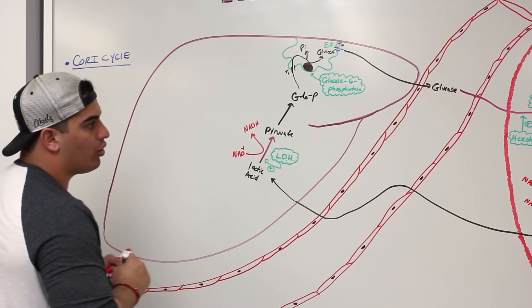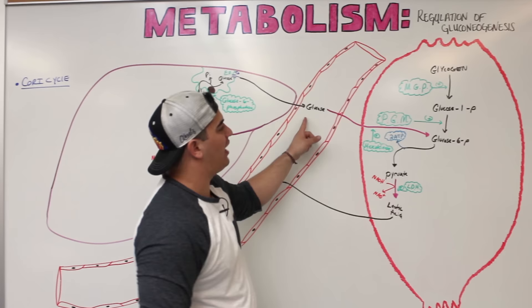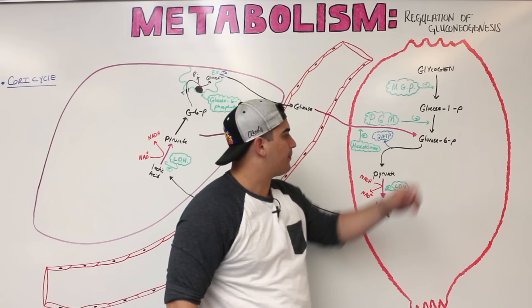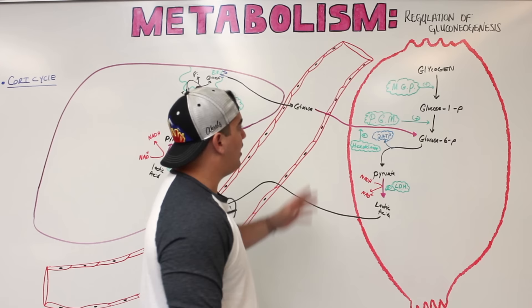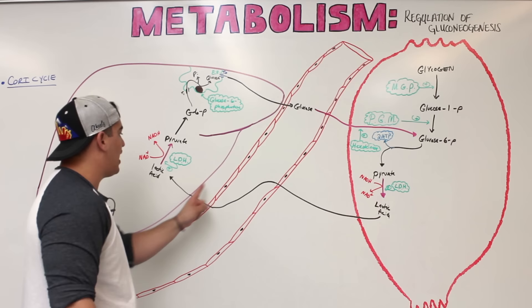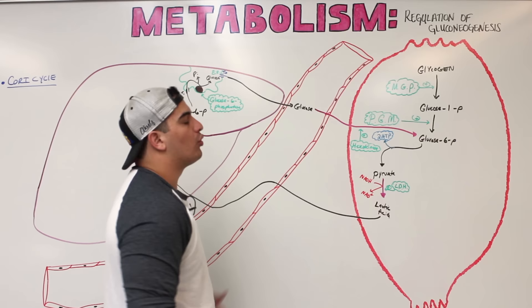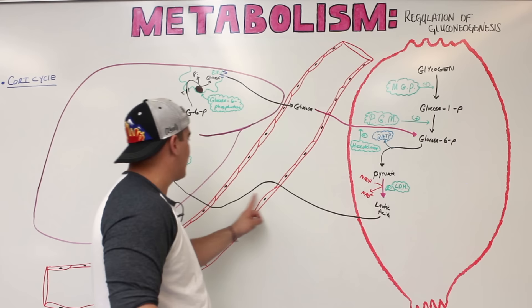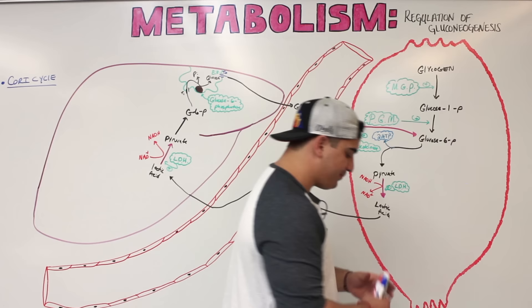The Cori cycle is basically how we get glucose from the muscle to the liver to be converted into free glucose, because the muscle can only get to glucose-6-phosphate and then stops — it doesn't have glucose-6-phosphatase. The process of taking lactic acid into the liver and converting it into glucose is gluconeogenesis.